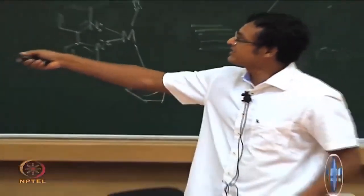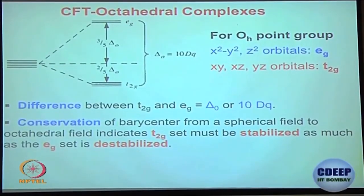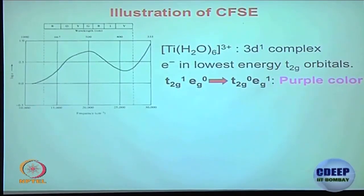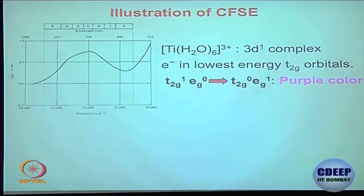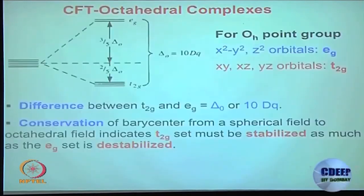Let us take a practical example: the titanium hexa-aqua complex [Ti(H₂O)₆]³⁺. Titanium is 3d² 4s², so in the 3+ state it becomes 3d¹ — one d electron. In crystal field terms, we no longer just say d¹; we say T2g¹ Eg⁰, because the one electron occupies the stabilized T2g level first.